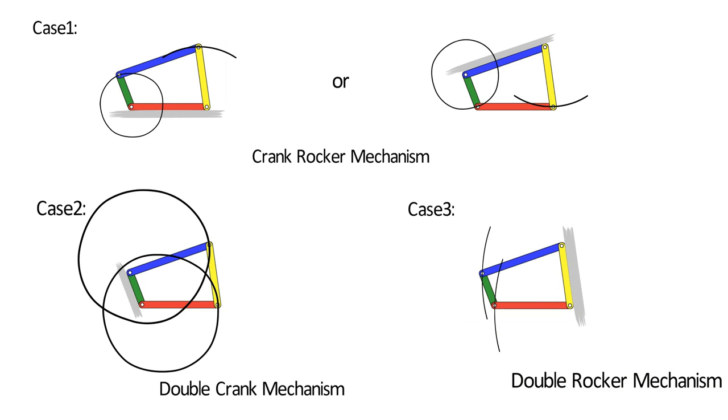With the help of this example, we saw how the behavior of the mechanism changes when we fix its different links. This is known as Kinematic Inversion. In subsequent videos, we will take more examples on Kinematic Inversion. Hope you enjoyed this video.